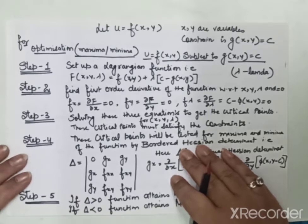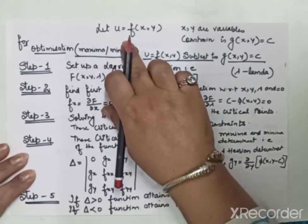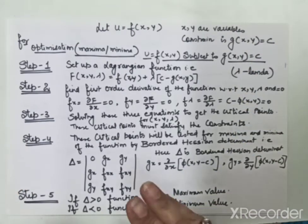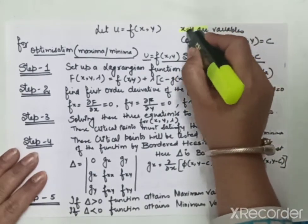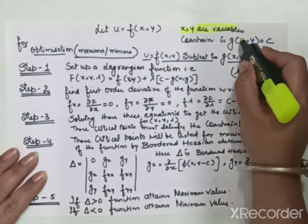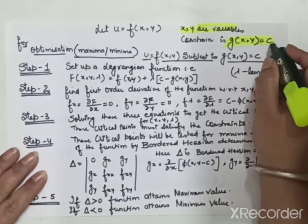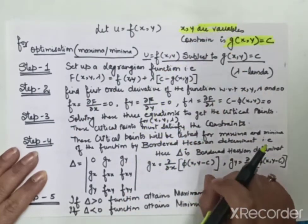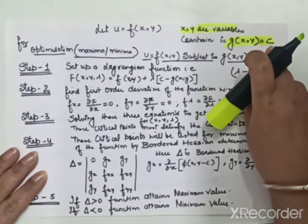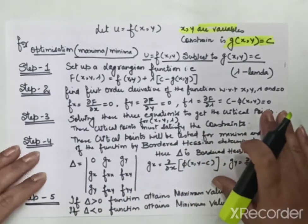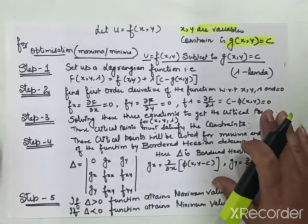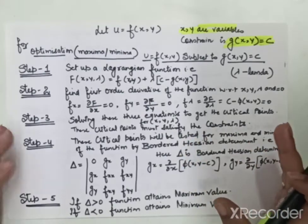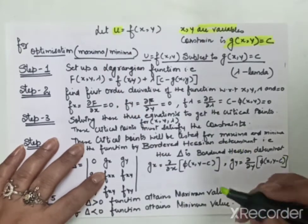So let u be a function of x and y. We have given two variables x and y, and we have given a constraint. The constraint also contains x and y and a constant c. For optimization, meaning to find maxima and minima, we have five steps in which we are going to find the maximum or minimum value of our function u.